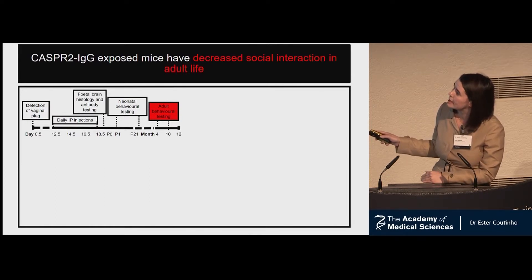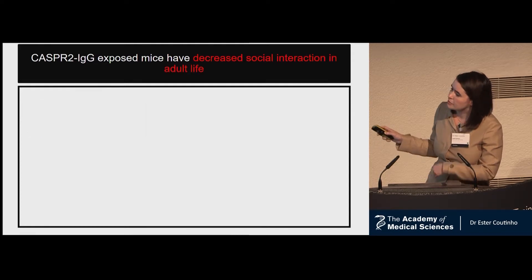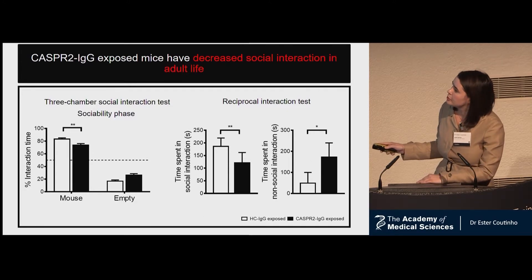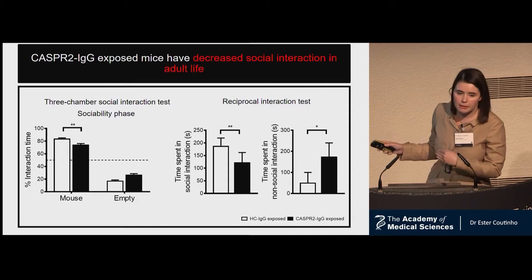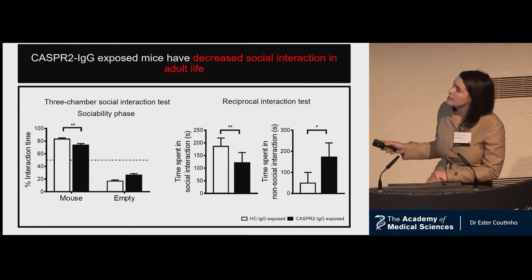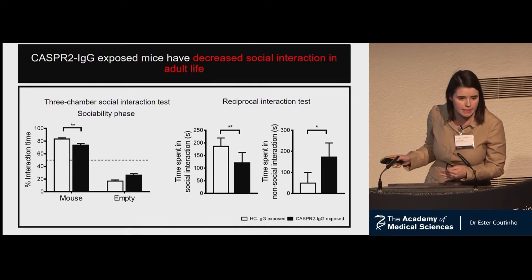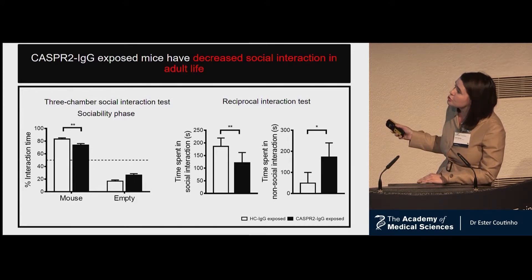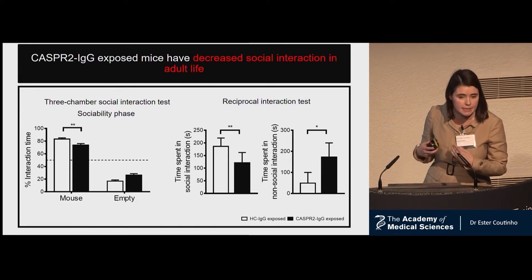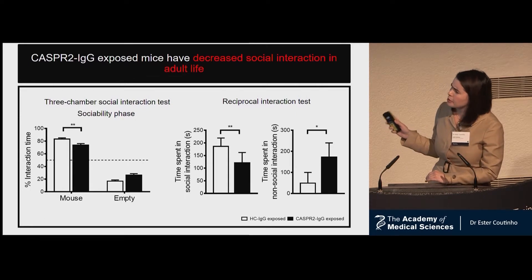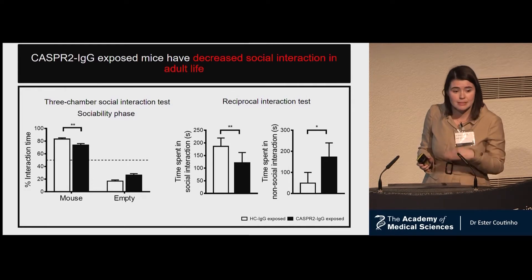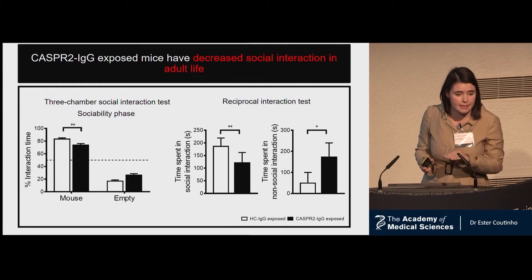Running a series of behavioral tests, the most striking finding was that the CASPR2 IgG mice, shown here in black, in two different paradigms of social interaction, spent less time in social activities, less time interacting with another mouse, and more time in non-social activities like grooming and digging. Importantly, these mice had been exposed many months before, suggesting that this early exposure led to permanent deficits.